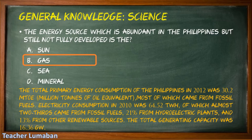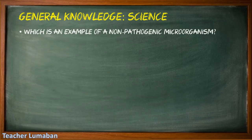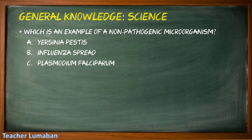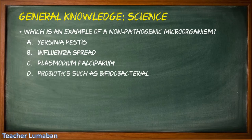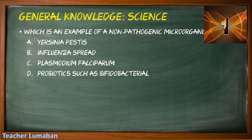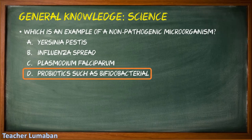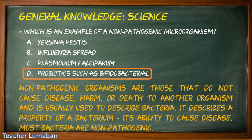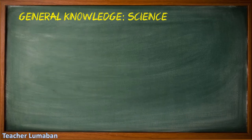Which is an example of a non-pathogenic microorganism? Letter A: Yersinia pestis, Letter B: influenza virus, Letter C: Plasmodium falciparum, Letter D: probiotics such as bifidobacteria. Non-pathogenic organisms are those that do not cause disease, harm, or death to another organism, and the term is usually used to describe bacteria. It describes a property of a bacterium — its ability to cause disease. Most bacteria are non-pathogenic.